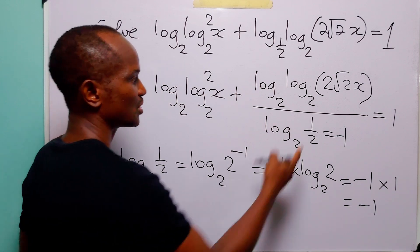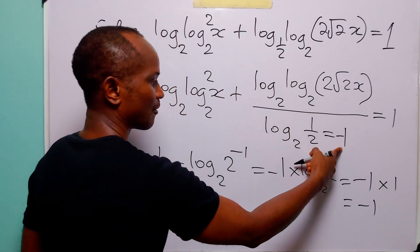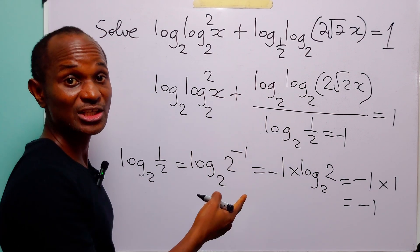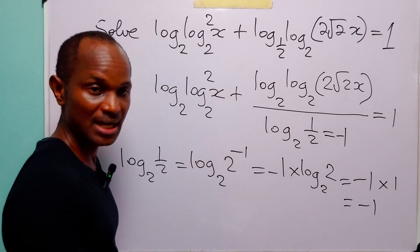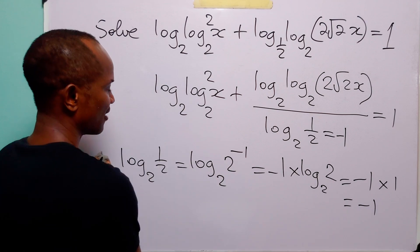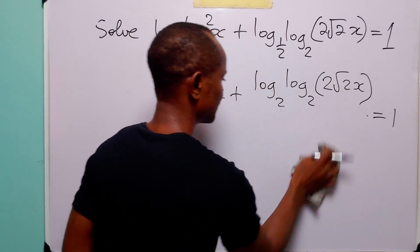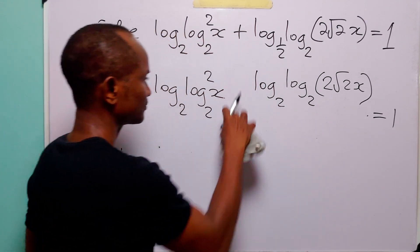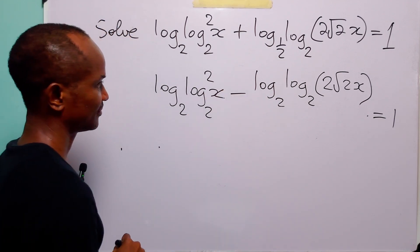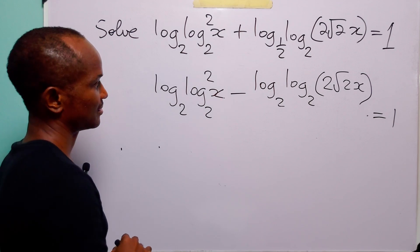We remember that log to base a of a is equal to 1, so this is simply equal to minus 1 times 1, which is equal to minus 1. So this denominator is simply equal to minus 1. And when we divide by minus 1, this positive sign will change to negative.